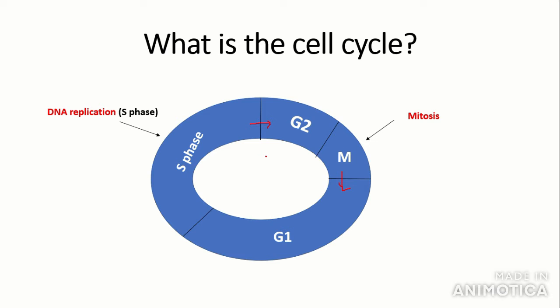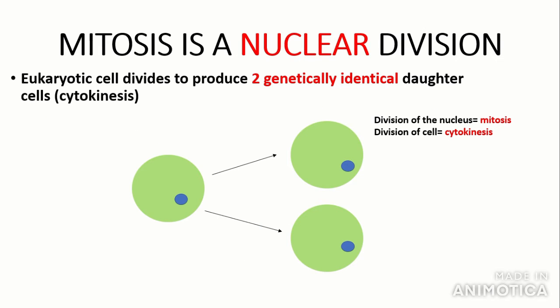So mitosis doesn't actually make a very large part of the cell cycle. Next thing that is really important to know is that mitosis is a nuclear division. It is not a cell division because division of the cell is called cytokinesis. So what happens in mitosis? Mitosis is when the nucleus divides and cytokinesis occurs to produce two genetically identical daughter cells. The key thing here is two genetically identical cells.